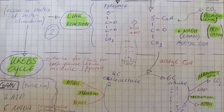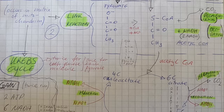Next up we have the link reaction, which is very short but very important. Importantly, this takes place not in the cytoplasm of the cell anymore, but in the mitochondria — specifically the mitochondria matrix, via active transport of pyruvate. Something very important is that from this point on, everything happens twice in the link reaction and the Krebs cycle, because we have two molecules of pyruvate. So everything described for one molecule of pyruvate happens twice for one molecule of glucose.